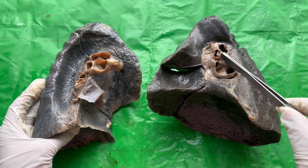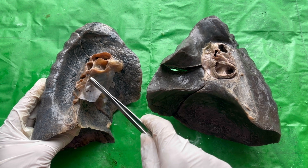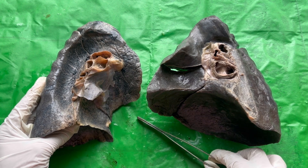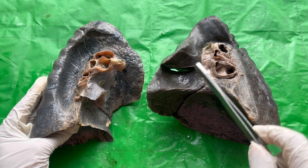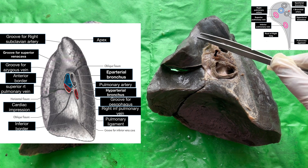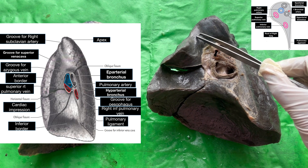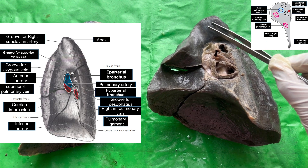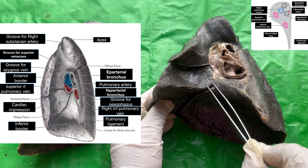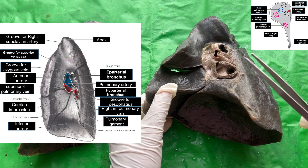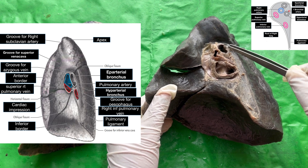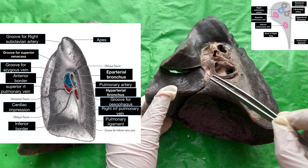Now let's know the impressions and the contents of the hilum of both lungs. Starting with the right lung — this groove is for the superior vena cava. Just behind the superior vena cava there is a groove for the right subclavian artery. This is the area for cardiac impressions. Just above, this is the horizontal fissure and below this is the oblique fissure. Above the root of the right lung, this groove is for the azygos vein.